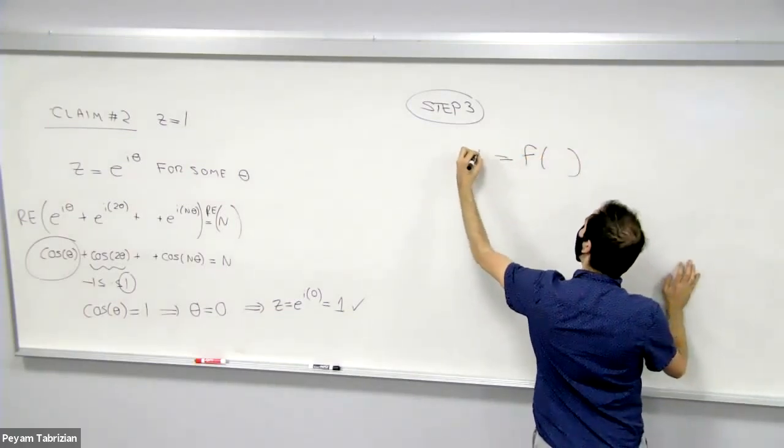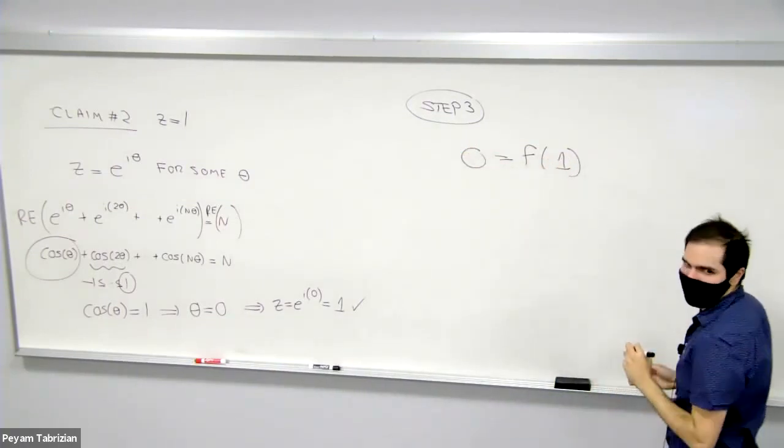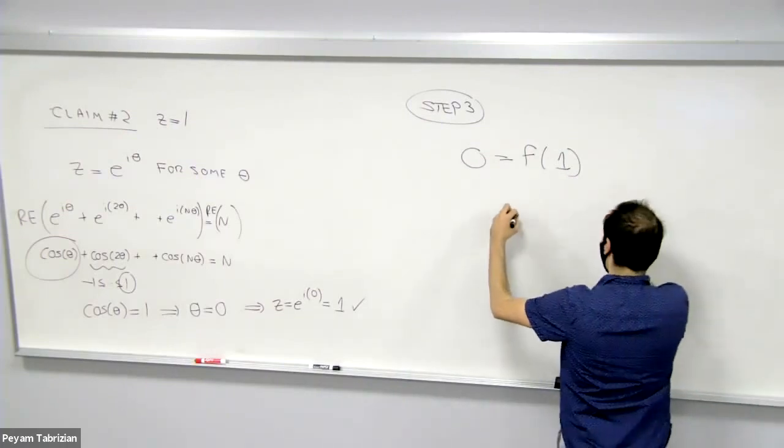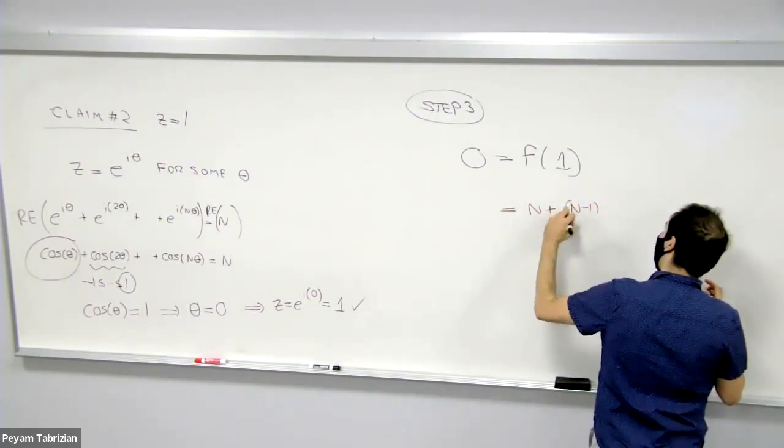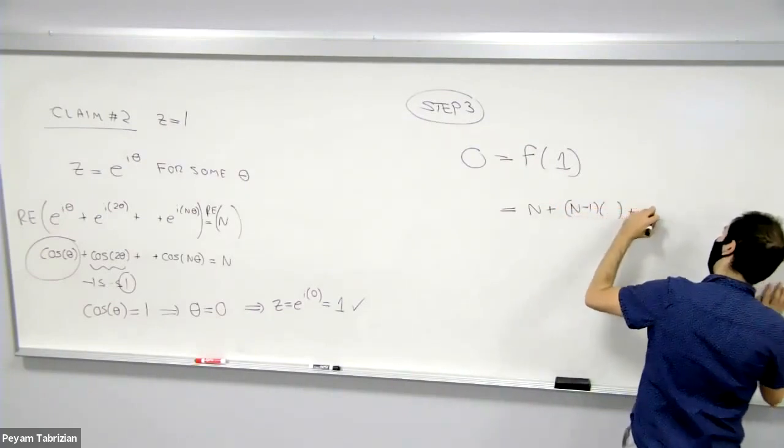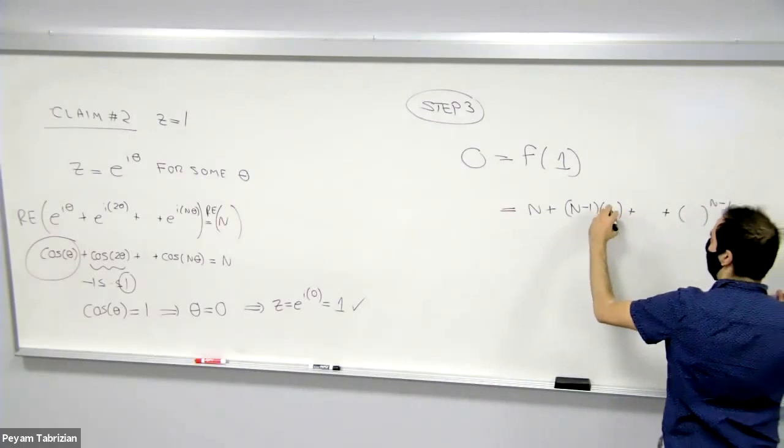But we've just shown that z is 1. So in fact, f(1) = 0. But now remember, what was f? It was n + (n-1)z + ... + z^(n-1). But now z is 1.